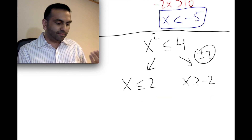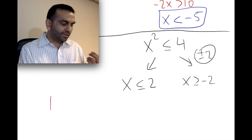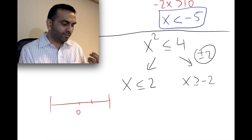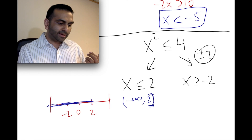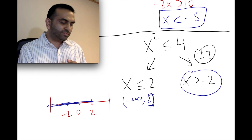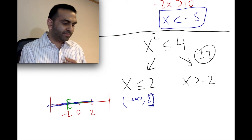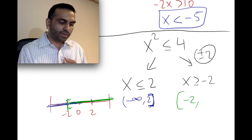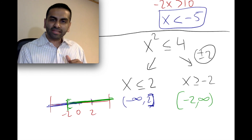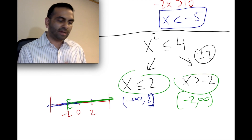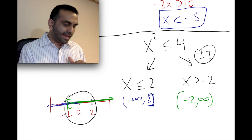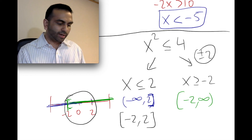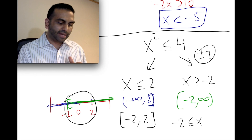From here we're already done. x is less than or equal to 2 — on a number line, if we have 0, 2, and negative 2, that's everything to the left of 2, from negative infinity to 2. And x is greater than or equal to negative 2 — that's everything to the right of negative 2, from negative 2 to positive infinity. But x has to have both conditions met, not just either of them. So you need the overlap — the range between negative 2 and positive 2. You can write this as negative 2 is less than or equal to x is less than or equal to 2.